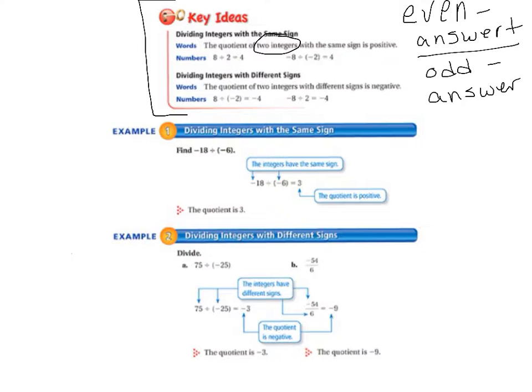This is just like multiplying integers, where you divide exactly the same way you normally would, and then you count up your negative signs. If it's even, your answer is positive. If it's odd, your answer is negative.